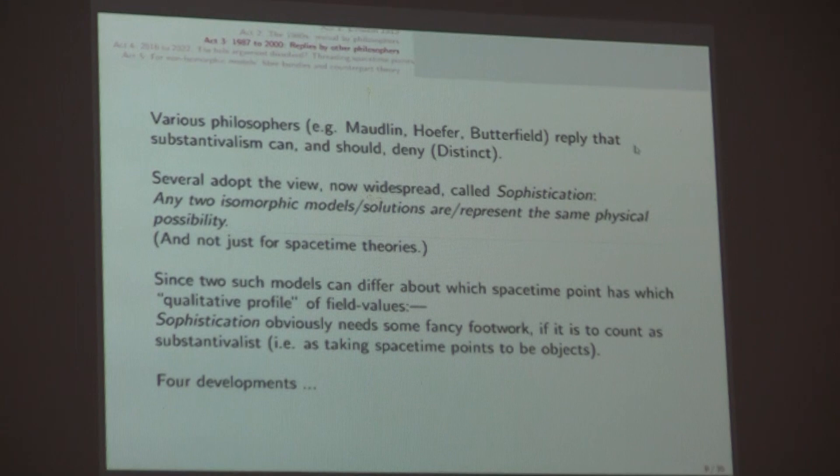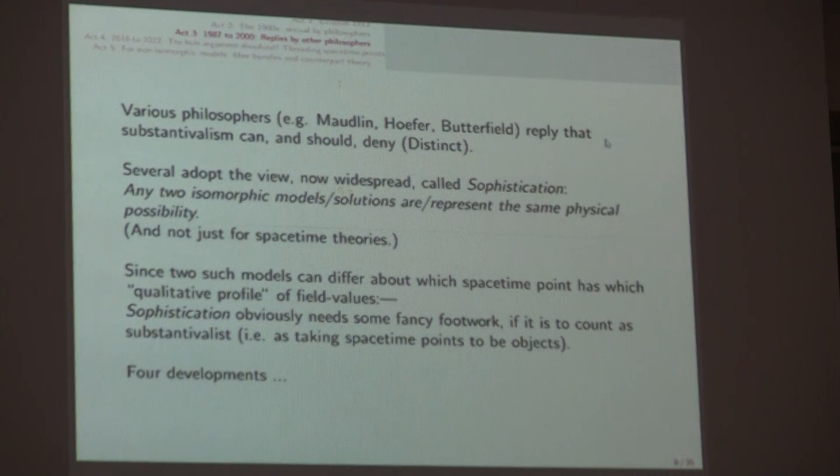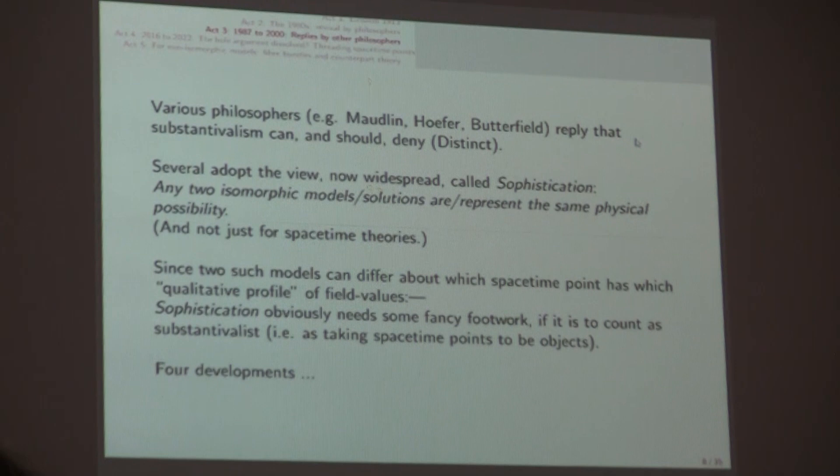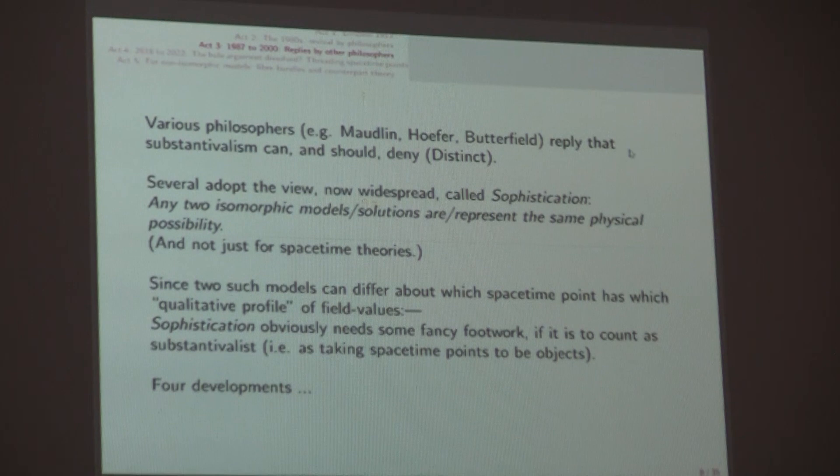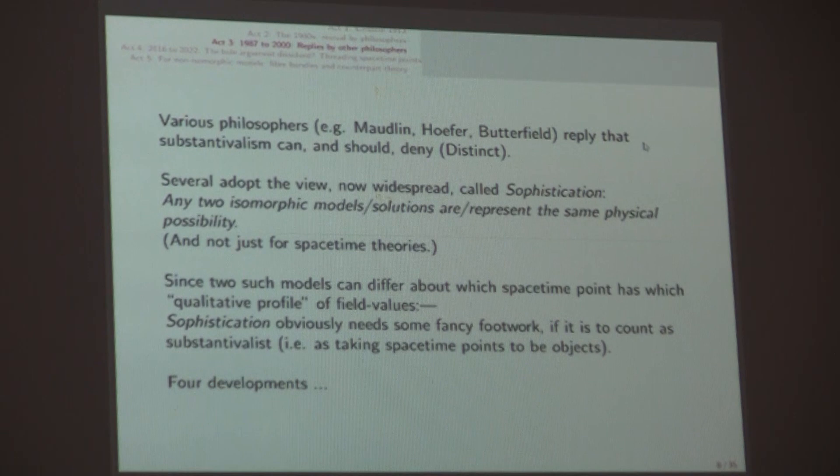Substantivalism is the claim that spacetime points are objects. Object in philosophy comes with connotations essentially from Frege and Quine, but we can just take it to mean object. Earman and Norton assume that substantivalism is committed to the assumption distinct, that it's a distinct possibility if the qualitative profile has moved across the population of objects. And so substantivalism is false. So, Act 3, there were various replies. Maudlin, Hoefer, Butterfield.